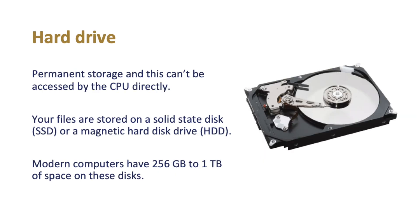Hard drives and SSDs are storage devices that offer permanent storage. RAM is very fast but temporary — if you want to save data, you need a hard drive or SSD. Solid state drives are electronic devices with no moving parts, whereas magnetic hard disk drives have moving parts: platters and read/write heads. Most modern computers have around 256 GB to 1 terabyte of storage space.